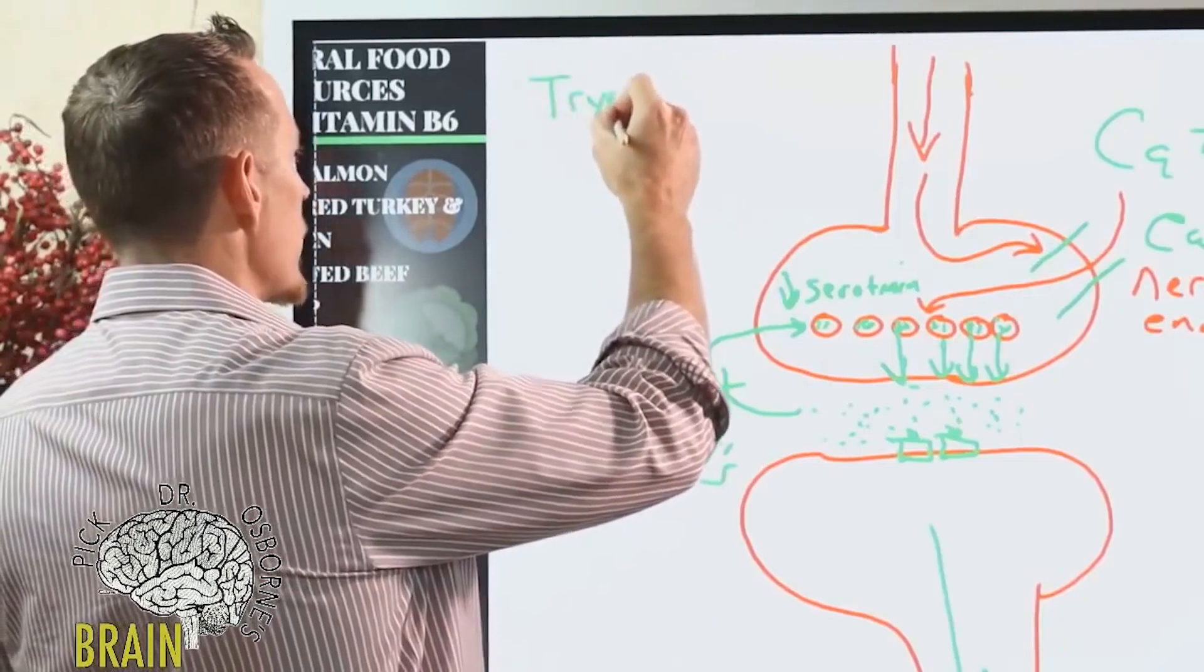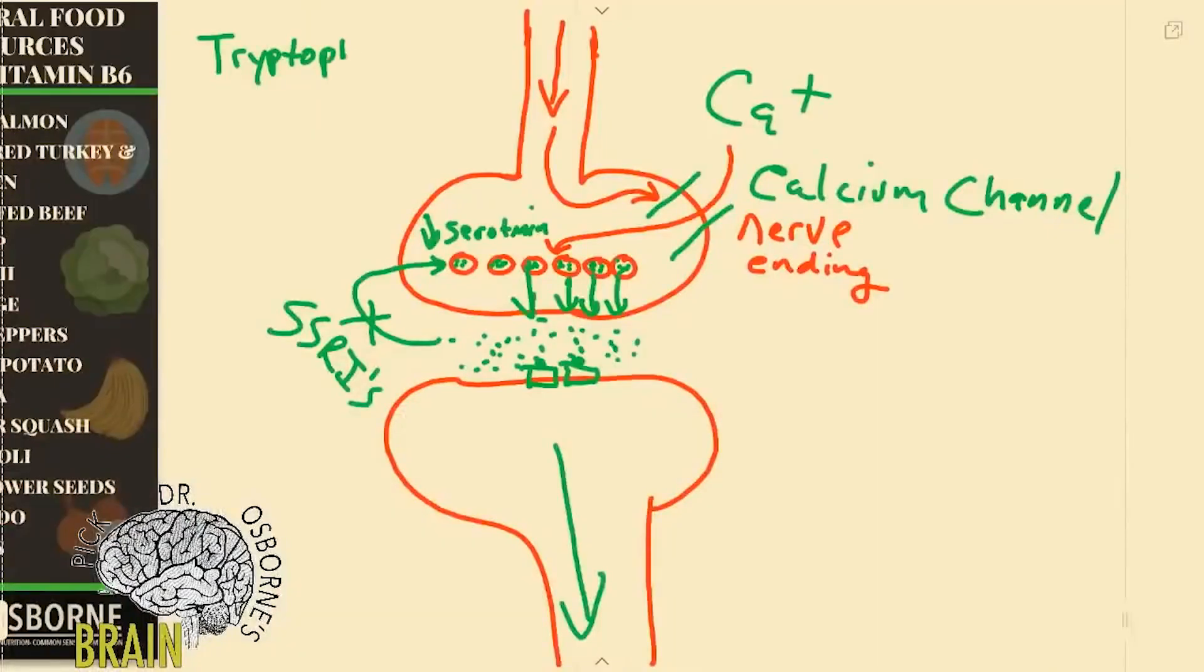Now why is that a problem? Because doctors are barking up the wrong tree in my opinion. You could have a tryptophan deficiency. If you have a tryptophan deficiency you can't make serotonin. Remember that serotonin comes from tryptophan and that comes from your diet.